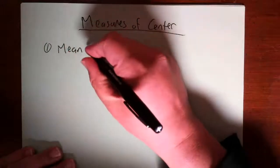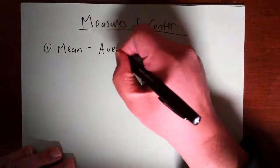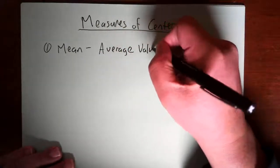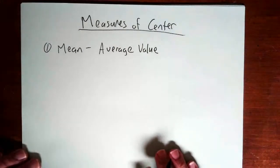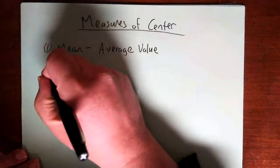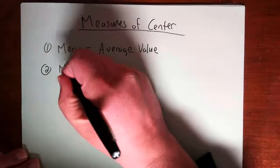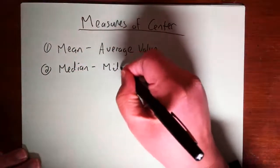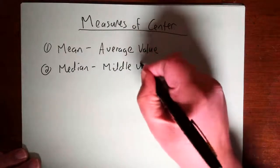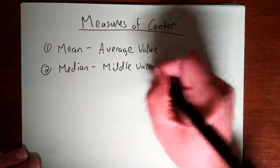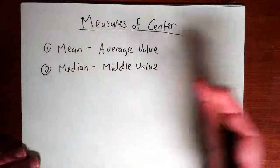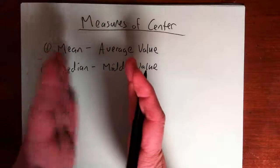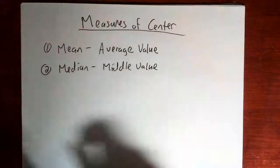That's going to be our first measure of center, and it's known as the mean. The mean is the average value of the data set. There's also the median, and the median is the middle value of the data set — it's the value where half of the data lies below it and half lies above it.